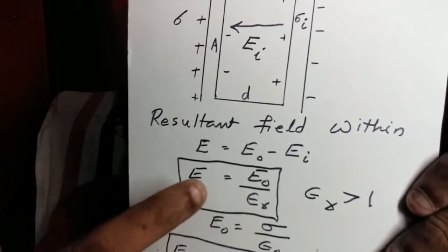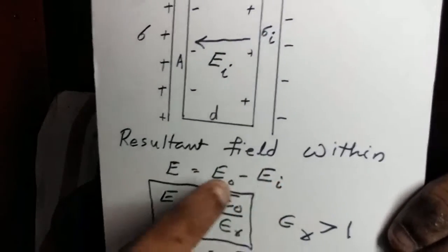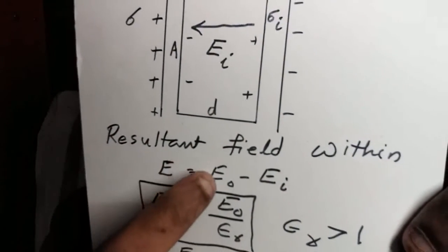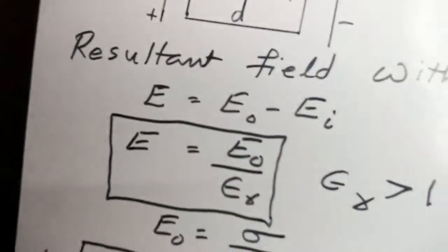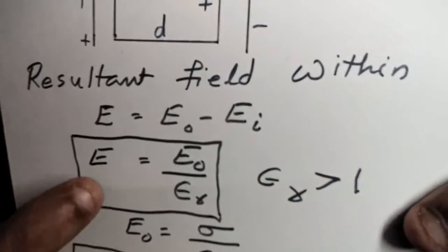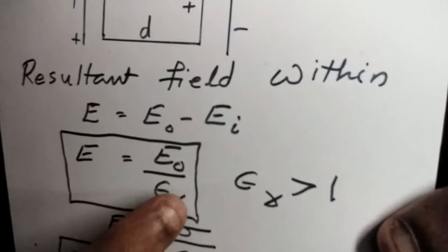Thus, there is a reduction in intensity of the field inside the dielectric slab. This reduction can be expressed as a fraction. You can express any change in the form of a fraction, like this: E equals E0 minus EI, meaning the resultant field is reduced from E0. We can express it as E equals E0 by epsilon r.